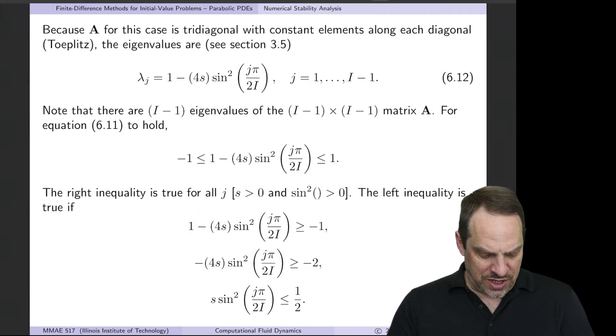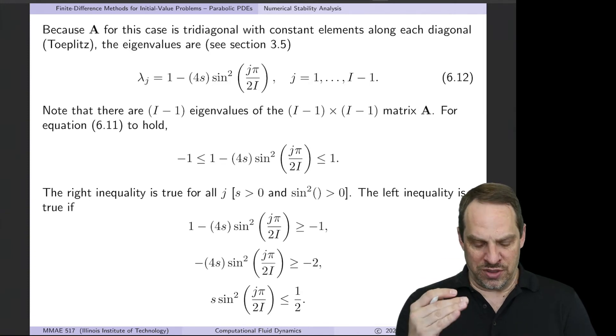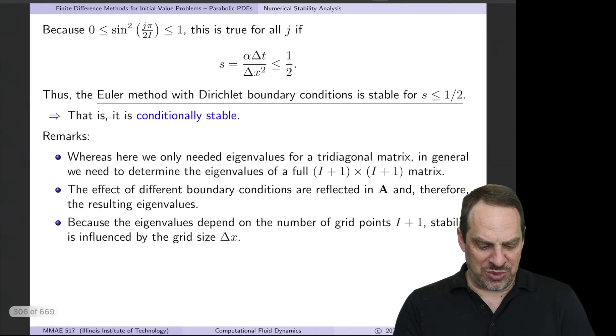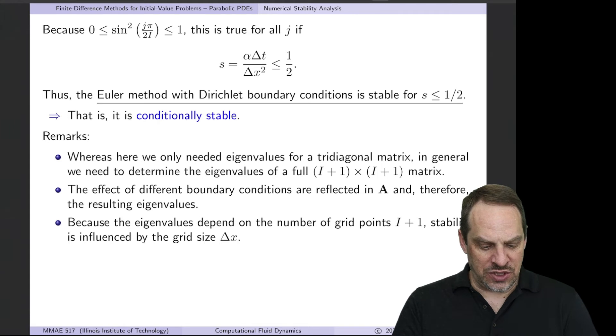If I subtract 1 from both sides to get rid of this, and then I have a minus 2 on the right. And if I divide by minus 4 on both sides, then I get s sine squared is less than or equal to a half. Remember, when you divide by a negative number, you have to switch the direction of the inequality. So the greater than or equal to becomes the less than or equal to. Now sine is always between minus 1 and 1. Sine squared then is always between 0 and 1. So s, which is positive, times sine squared, which is positive. And the largest value that the sine squared can take on is 1. That tells us that s has to be less than or equal to a half.